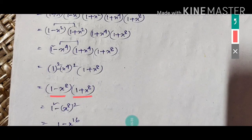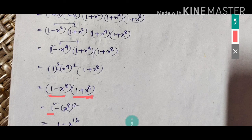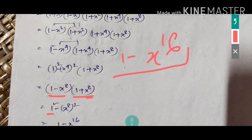Now (1−x⁸) times (1+x⁸): again applying a minus b times a plus b, we get a squared minus b squared. Here a squared is 1 squared and b is x⁸, so b squared is x⁸ squared, which means x to the power 16. So the final answer is 1 minus x to the power 16.